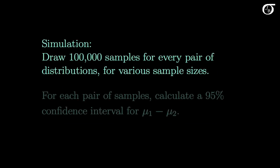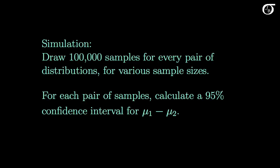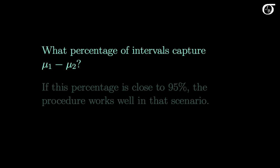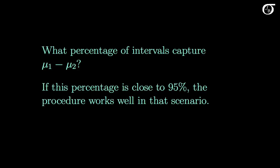In these simulations we're going to draw 100,000 samples for every pair of these distributions for various sample sizes. For each pair of samples we calculate a 95% confidence interval for mu1 minus mu2, then ask: what percentage of these intervals captures the true value of mu1 minus mu2? If this percentage is close to 95%, the procedure works well in that scenario.